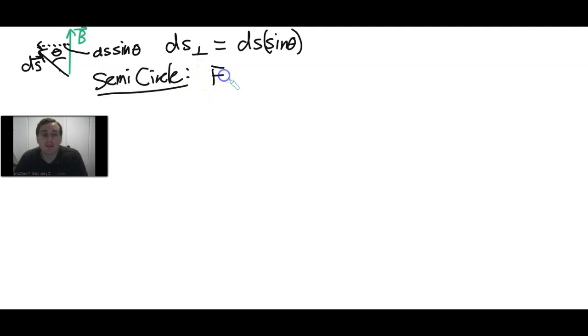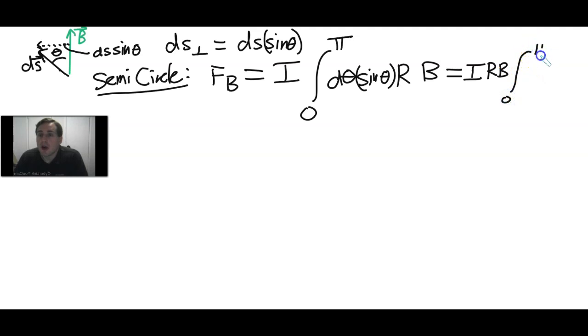Let's put together our integral. For the semicircle, F sub B magnitude should equal I and the integral will be from zero to pi. Then DS times sine theta times R times the magnitude of the magnetic field. Let's clean this up. Let's put any constants on the outside. I should have written D theta, not DS. So this is IRB, which is like we had in the straight segment, that combination of letters and constants, integral from zero to pi of sine theta D theta.